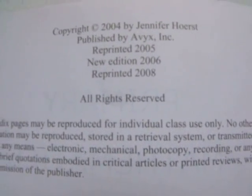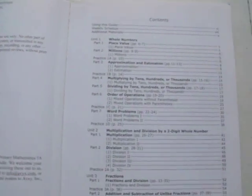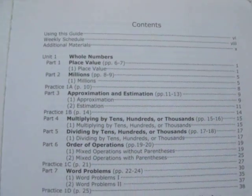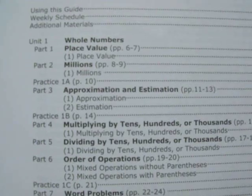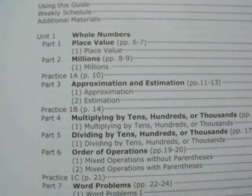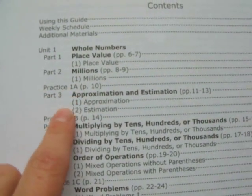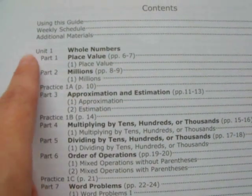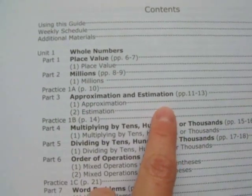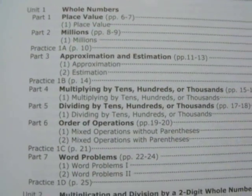The one I have is copyrighted in 2004. Here are the contents. Unit 1 is over whole numbers, such as place value, millions, and then you can see there's a practice. Part 3 for Unit 1 is approximation and estimation. Then there's practice.